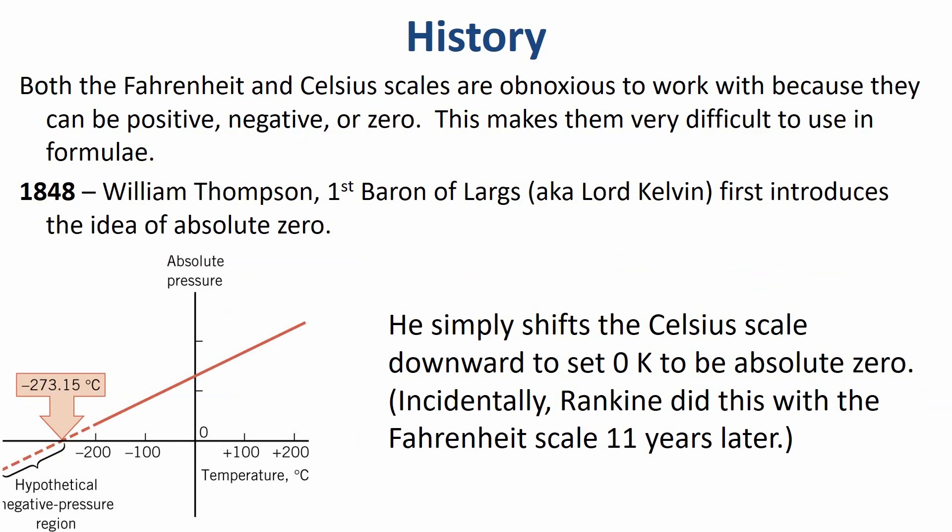It turns out Fahrenheit and Celsius are really obnoxious to work with in formulas. Imagine a formula with a T in it for temperature — T can be positive, negative, or zero, and if it's zero you can never divide by T; it just breaks all the math. So let's make something that's positive definite to make life easy. About a hundred years after Celsius, William Thompson — the first Baron of Largs, Lord Kelvin, and they don't name scientists like that anymore — introduces the idea of absolute zero.